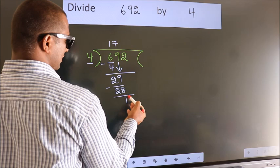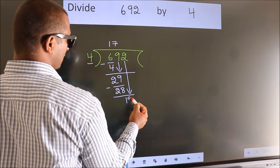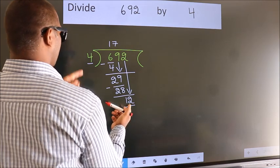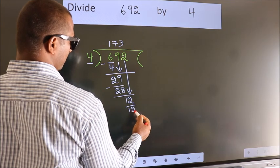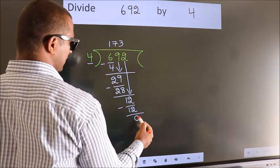After this, bring down the beside number. So 2 down. So 12. When do we get 12 in the 4 table? 4 threes, 12. Now we subtract. We get 0.